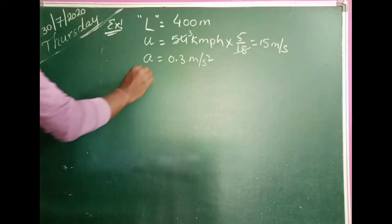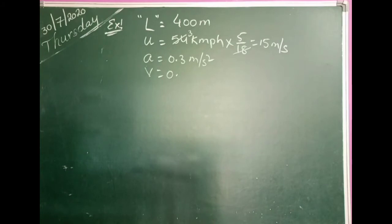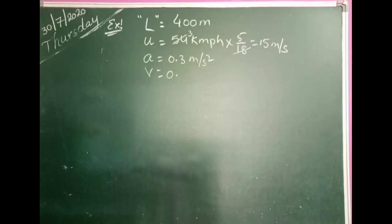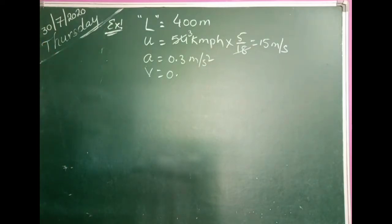Also, the final velocity of the train is 0. Why? Because after applying brakes, the train should come to rest. So final velocity V is equal to 0. By using this given data, we have to find out how much distance it travelled after applying the brakes within the time of 1 minute — that is, the position of the train relative to the signal light.